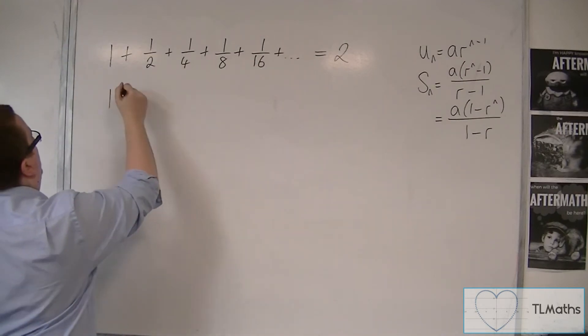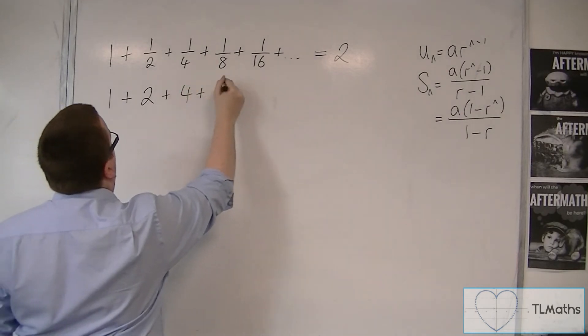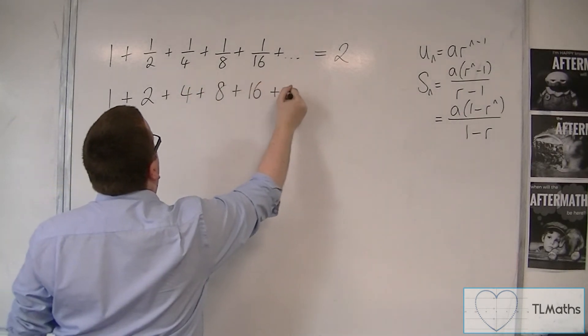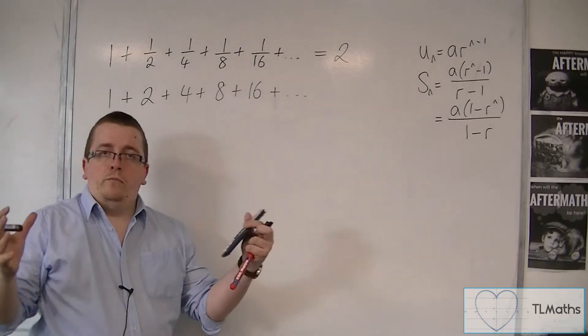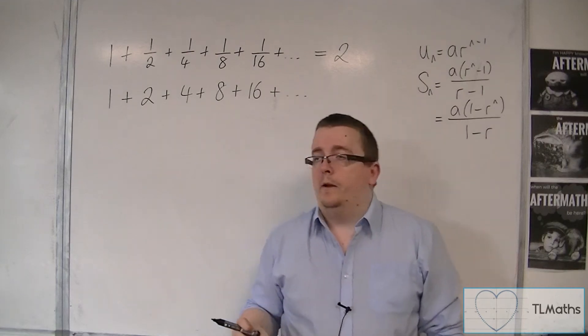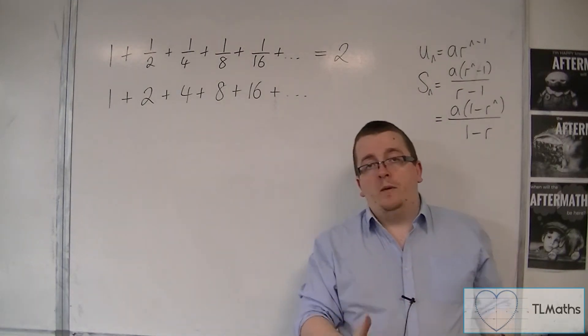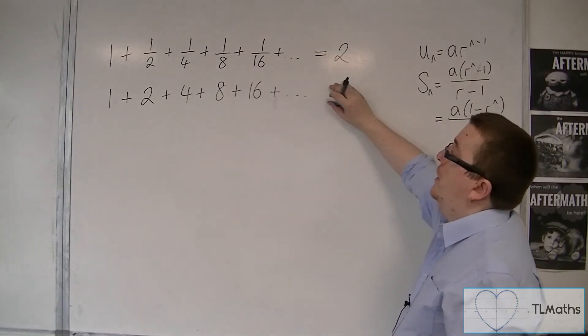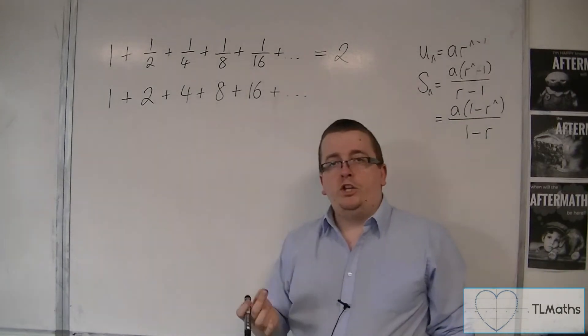Because clearly, if I started off with 1 and I was actually timesing by 2 each time. Then this clearly, when I add up all of these, they don't converge upon a singular number. Then I keep on adding on larger and larger and larger numbers. So there will be no sum to infinity for this. And it's all down to that common ratio. What I'm multiplying by.